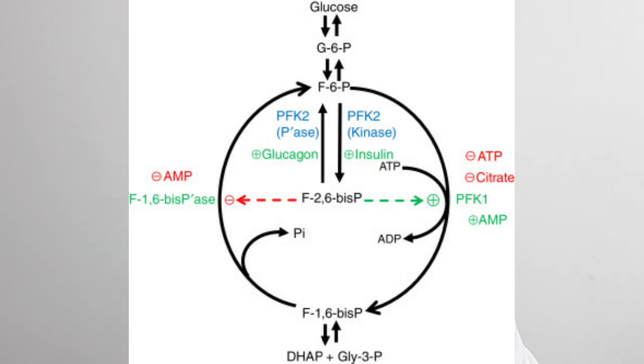Two hormones control the concentration of fructose 2,6-bisphosphate in the cytoplasm of the liver. Insulin increases fructose 2,6-bisphosphate concentration, indirectly exerting a positive effect on PFK1. Glucagon decreases fructose 2,6-bisphosphate concentration, indirectly having a negative effect on glycolysis. PFK2 will be discussed in detail in a future video.